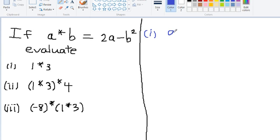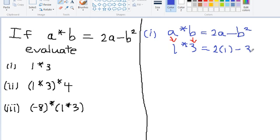We are using this binary operation as our guide and will substitute values of a and b. So 1 star 3 will be equal to, as you can see here, a is equal to 1 and b is equal to 3. So we will have 2 times 1 minus 3 squared.